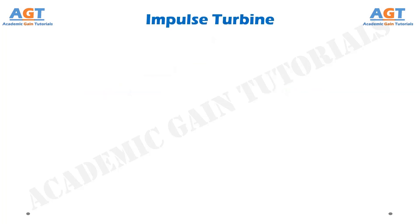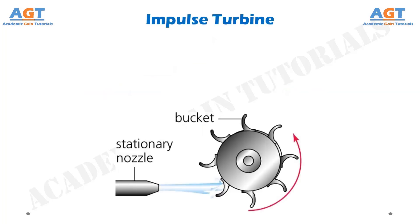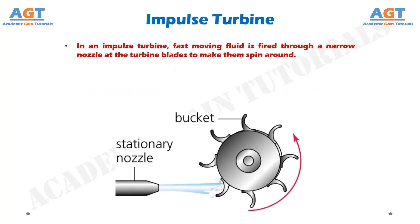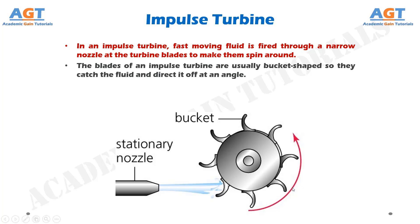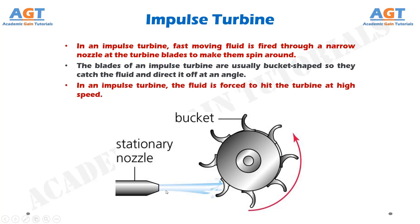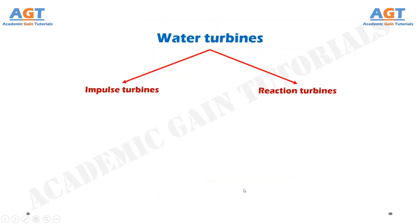In an impulse turbine, fast moving fluid is fired through a narrow nozzle at the turbine blades to make them spin around, as we can see in this figure. The blades of an impulse turbine are usually bucket shaped so they catch the fluid and direct it off at an angle. The fluid is forced to hit the turbine at high speed. The impulse turbines are again of two types.